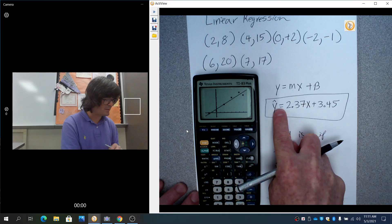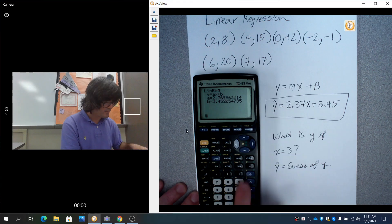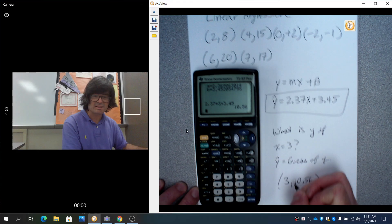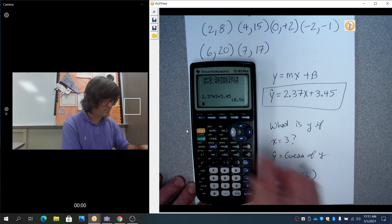So I'm just going to go put in 3 right here, spit out my y and see what we get. I'll do on the calculator 2.37 times 3 plus 3.45. That would be a guess of 10.56 - that's a guessed point.